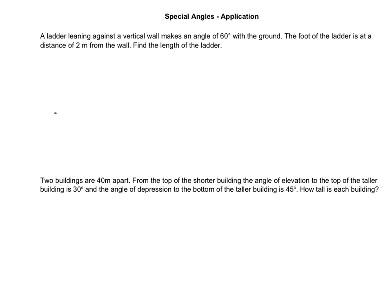I know I have the ground and a wall and my ladder, which is the hypotenuse. My ladder is making an angle of 60 degrees with the ground, so this angle at the bottom is 60 degrees, because the ground is the horizontal, the wall is the vertical, and the ladder is the hypotenuse. It also tells me that the foot of the ladder is at a distance of 2 meters from the wall, so this base is 2 meters. We're looking for the length of the ladder, which I will label as x.